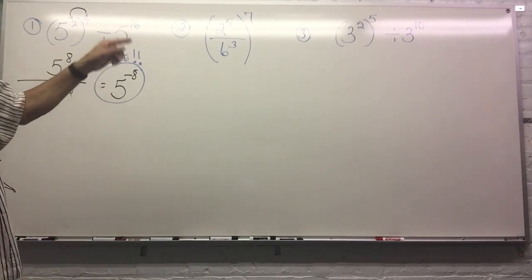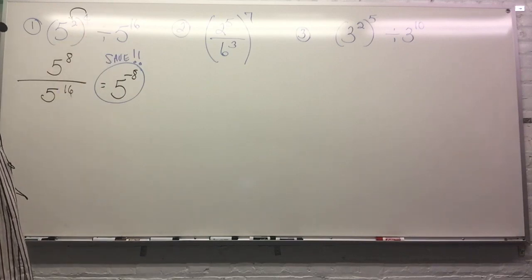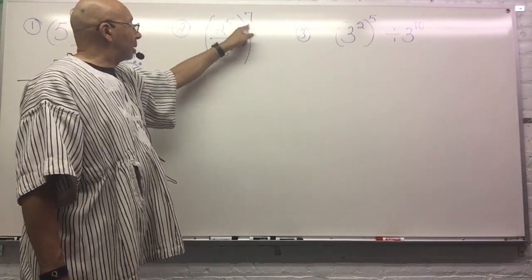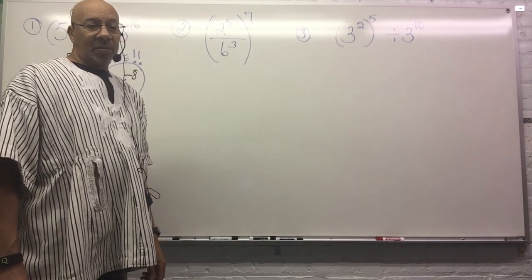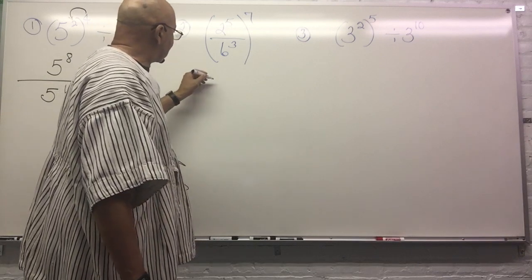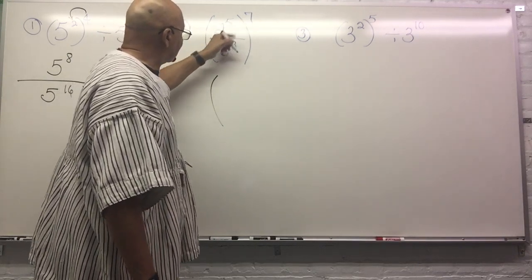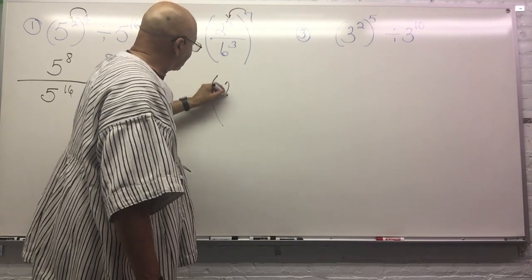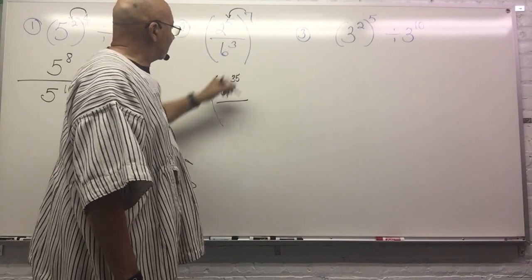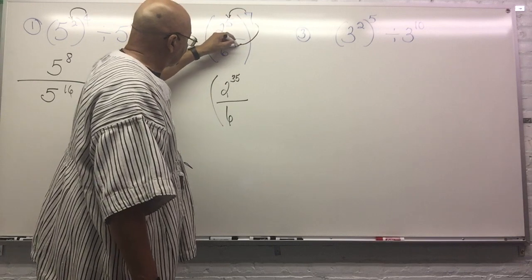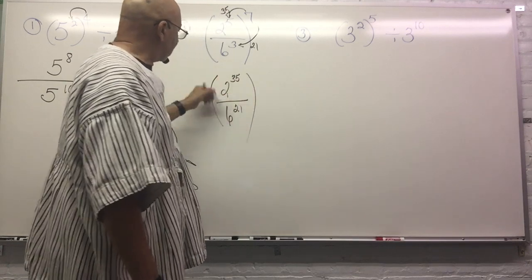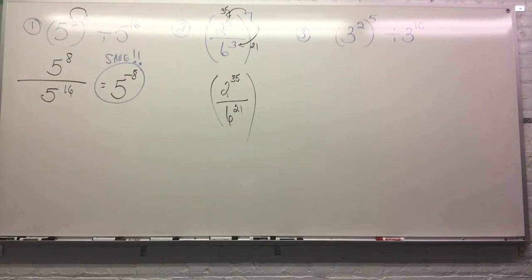Here's another: two to the fifth power over six to the third power, all raised to the seventh power. I could write this seven times, or I can multiply the exponents directly: seven times five gives two to the thirty-fifth power, and seven times three gives six to the twenty-first power. So the result is two to the thirty-fifth divided by six to the twenty-first. There's nothing else I can do because the base numbers are not the same.